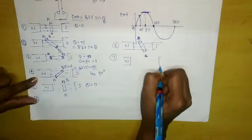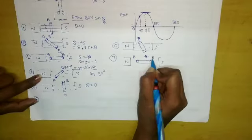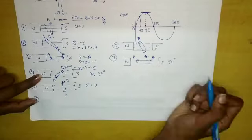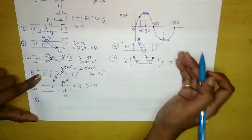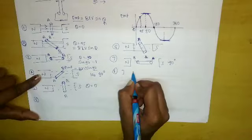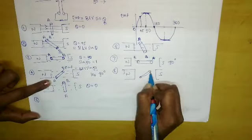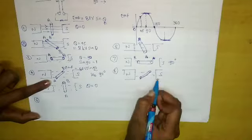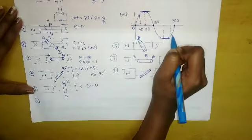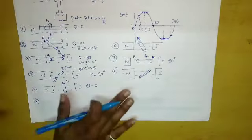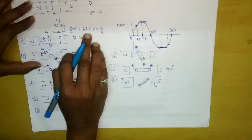In the seventh position, the conductor is again at 90° but with B and A swapped, so maximum EMF is induced again — but in the opposite direction, giving the negative peak. In the eighth position, the angle is less than 90°, so the negative EMF decreases. This is how the waveform is drawn using the formula EMF = BLV sinθ.